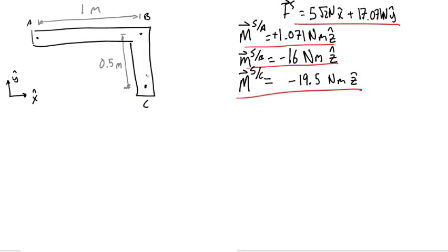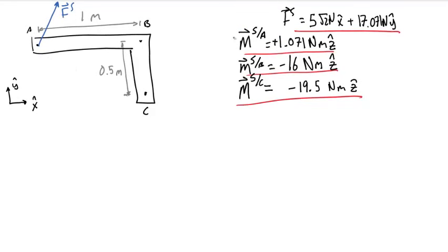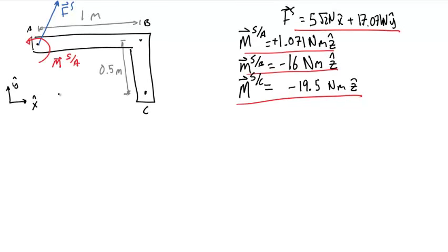To replace the loads on the original system with a single force and couple at A, we take the resultant force on the system and place it at A. To account for the change in moment, we place the moment from the system at A as the equivalent couple. This creates an equivalent load — a force and couple at A — which represents all of the loads in the previous system.